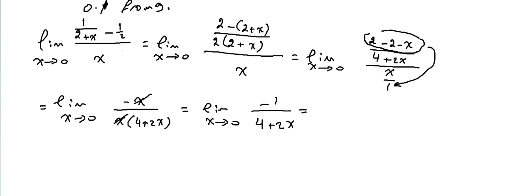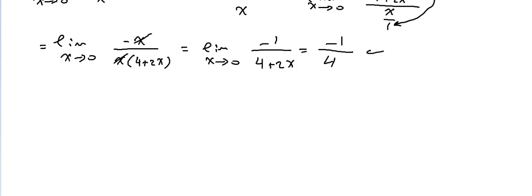Now we can substitute x=0. Why couldn't we replace 0 from the beginning? Because we'd get 1/(2+0) minus 1/2, which is 0 in the numerator over 0 in the denominator — an undetermined form. Now that we've cancelled the x, substituting x=0 gives -1/4. That's the answer. Let's do another one.